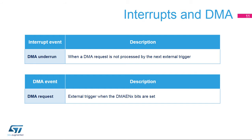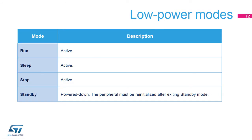To transfer data from the memory, a DMA request can be generated. The digital-to-analog converter is active in the following power modes: Run, Sleep, and Stop. In Standby mode, the DAC is powered down and it must be re-initialized afterwards.